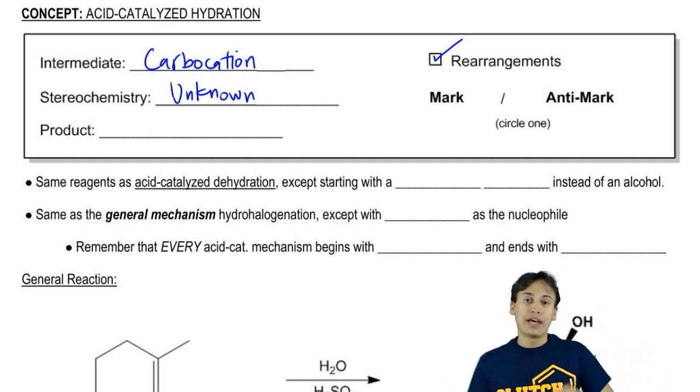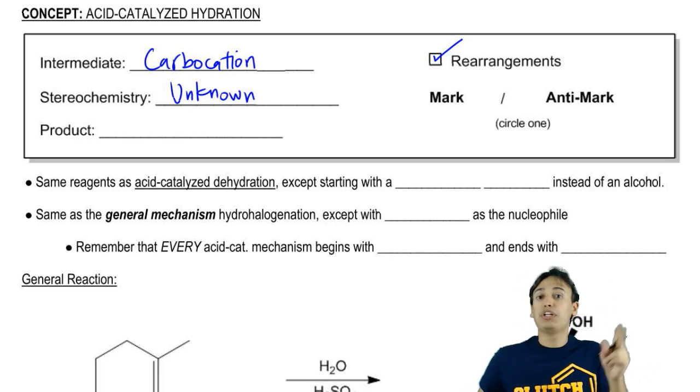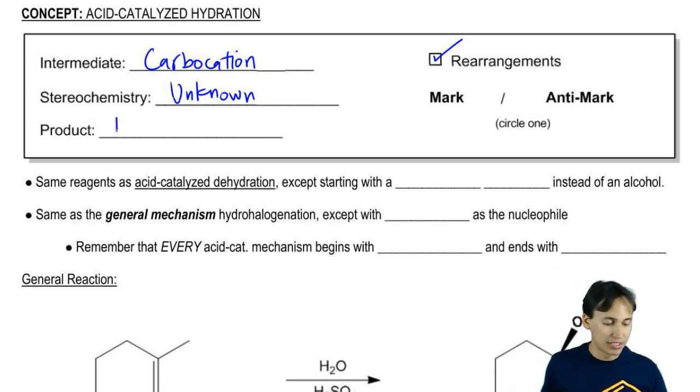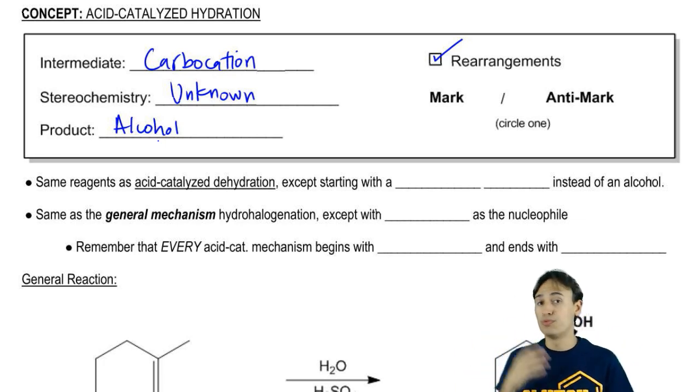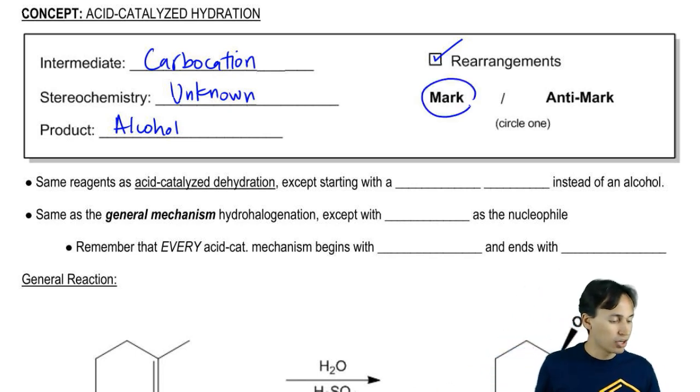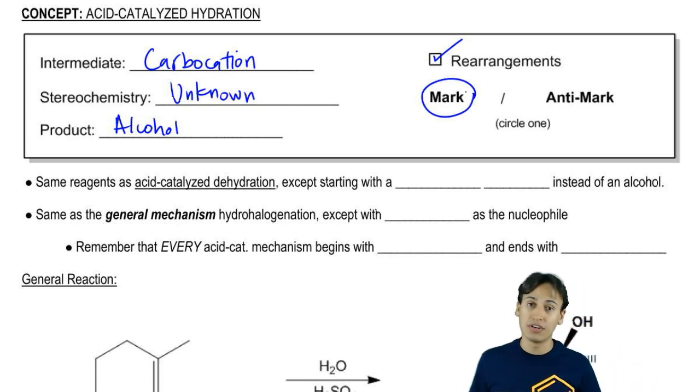As we said earlier, acid-catalyzed hydration, or simply known as hydration, is the first of three methods to make what? Alcohol. We know that my product is going to be an alcohol. Now, is this going to be a Markovnikov alcohol or an anti-Markovnikov alcohol? Well, it turns out that in this section we're going to learn how to do both. We're going to learn how to do Mark and anti-Mark alcohols, but hydration is definitely a Markovnikov reaction. It's a Markovnikov alcohol because your carbocation is always going to want to form in its most stable location.